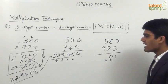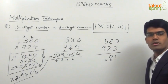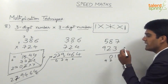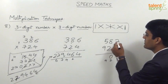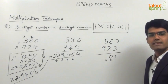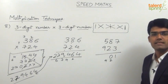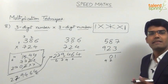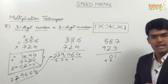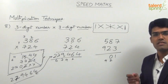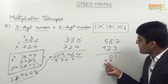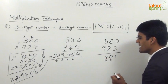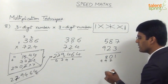The third step is cross multiplication of units with hundreds and multiplication of tens places: 5 into 3 is 15, 9 into 7 is 63; 15 plus 63 is 78. And 8 into 2 is 16; 78 plus 16 is 94. With carry 4, 94 plus 4 is 98, so we take 8 in the answer and 9 gets carried forward.